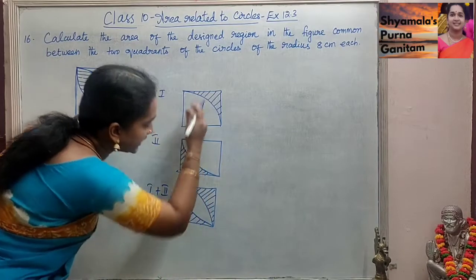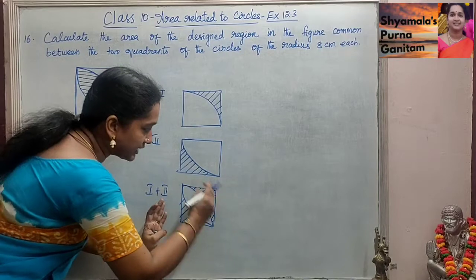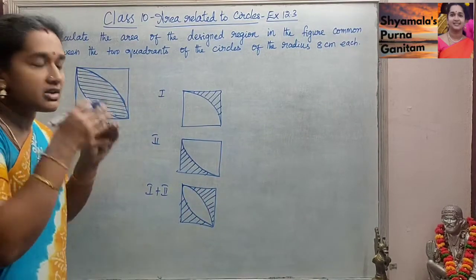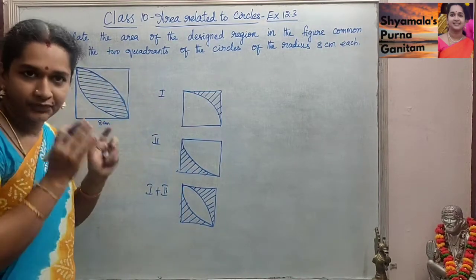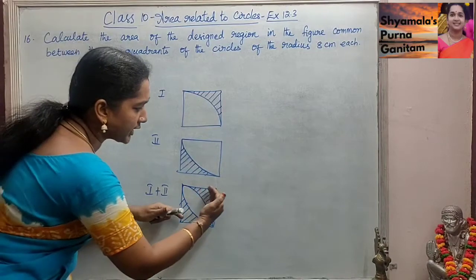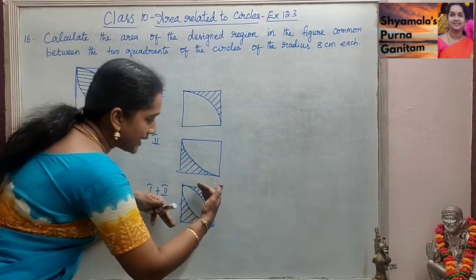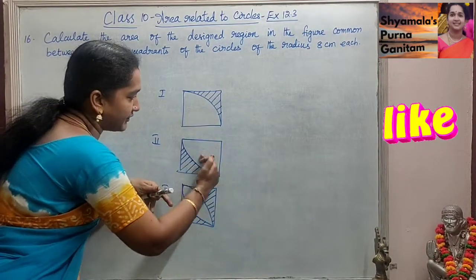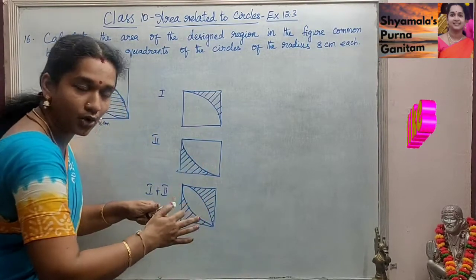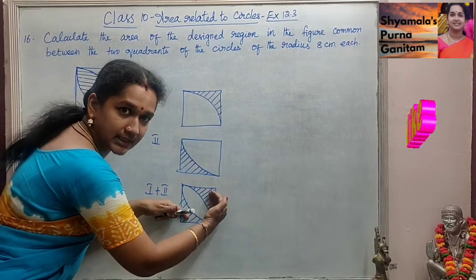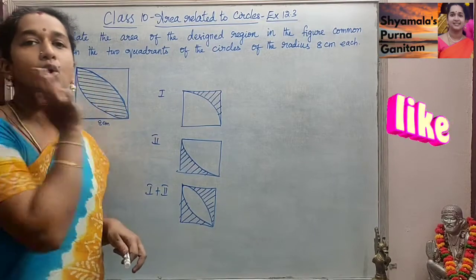When we add the first part and the second part, we will get the area of the outer shaded part. But we are asked to find the area of the inside region — the empty region. Since we got the area of the outside part, area of the square minus the combined shaded area will give us the required answer. This is how we are going to do it.